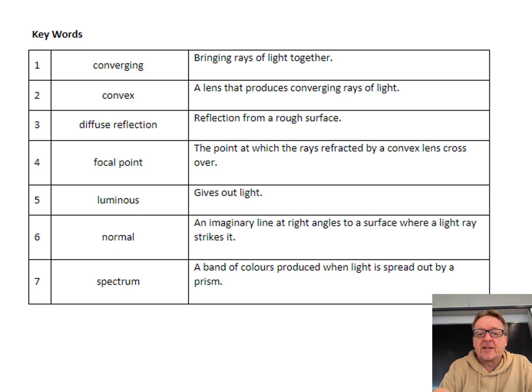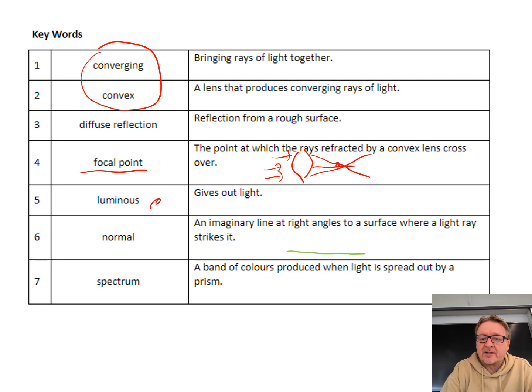Key words. Bringing rays of light together, converging. That is your convex lens. A lens that produces converging rays of light is convex. Diffused reflection, reflection from a rough surface. If you've got any rough surface, it spreads out the reflection. The point at which the rays refracted by a convex lens cross over is the focal point. That is where the lens has light shining in and the focal point is that point where they all meet. Gives out light is something that is luminous. The imaginary line at right angles to the surface. If I've got my mirror there, that line is the normal. And a band of colors produced when light is spread out in a prism is the spectrum: red, orange, yellow, green, blue, indigo, violet. The colors of the rainbow.